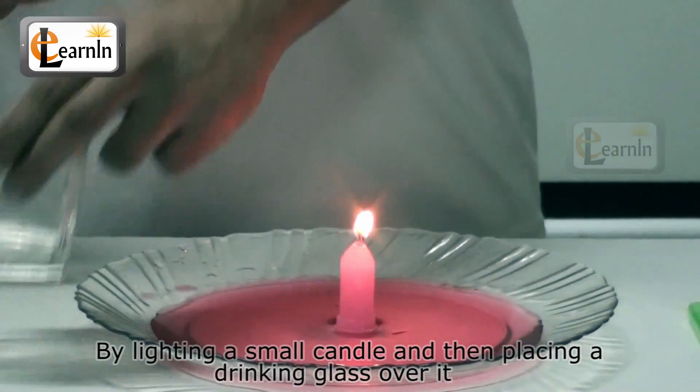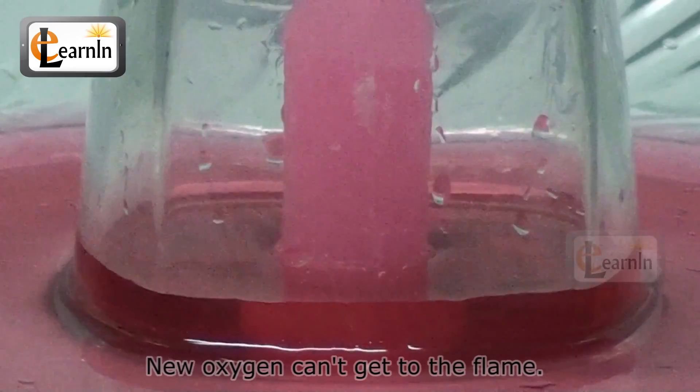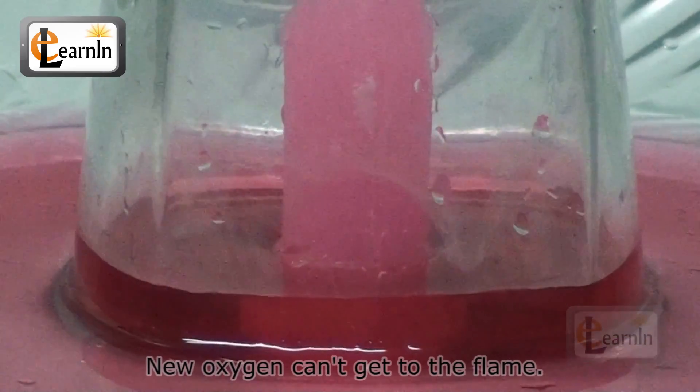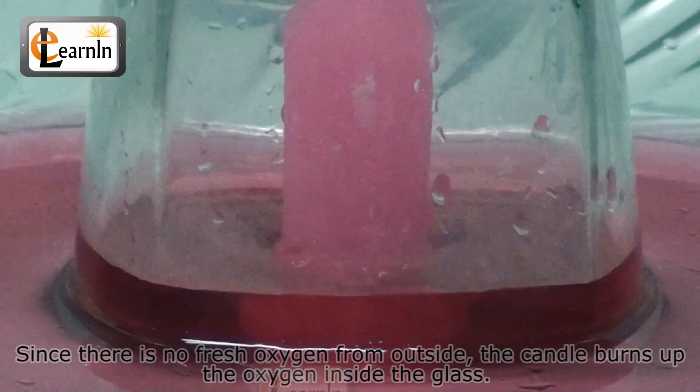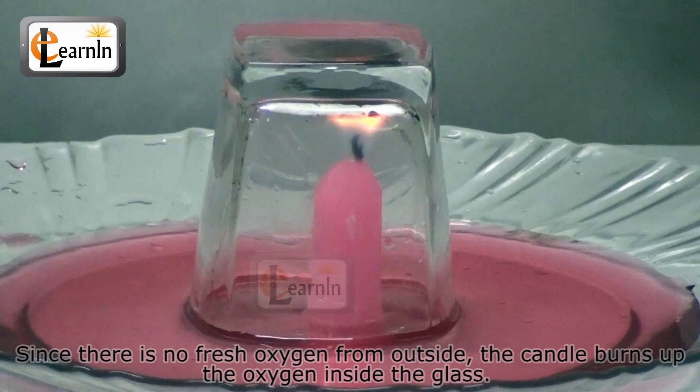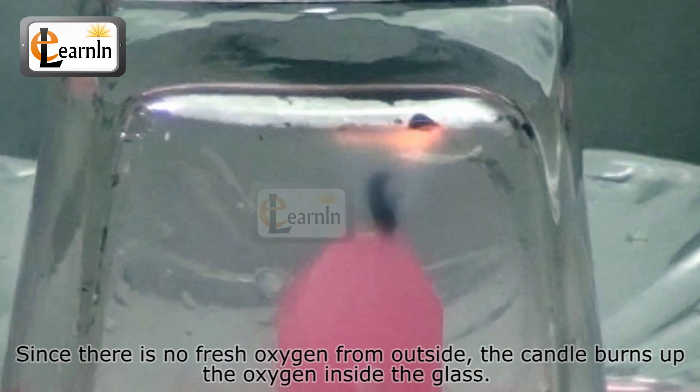By lighting a small candle and then placing a drinking glass over it, new oxygen can't get to the flame. Since there's no fresh oxygen from the outside, the candle burns up the oxygen inside the glass, and the fire goes out.